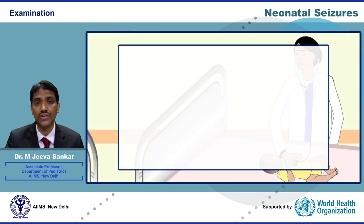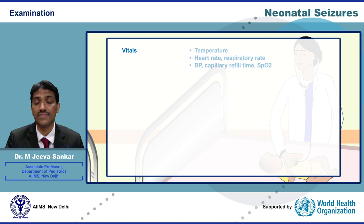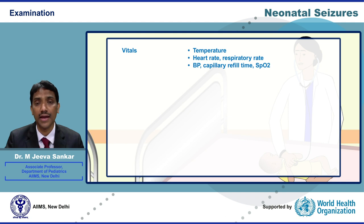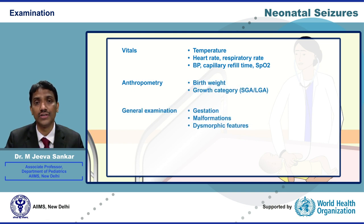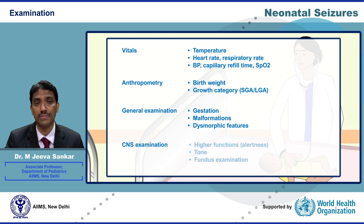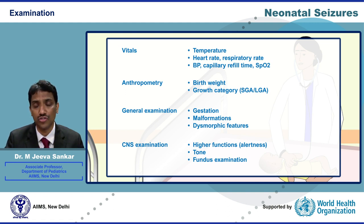While eliciting history, vital signs — temperature, heart rate, respiratory rate, blood pressure, capillary refill time, and oxygen saturation — should be recorded simultaneously. We should also assess gestation and determine the growth category, and look for any obvious malformations or dysmorphic features. In the central nervous system examination, higher functions and tone should be assessed, and the anterior fontanel and fundus should also be examined.